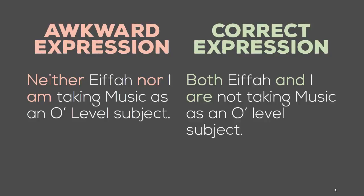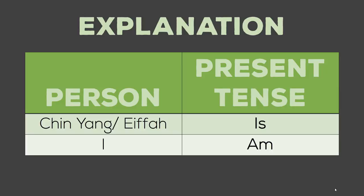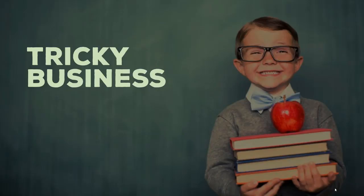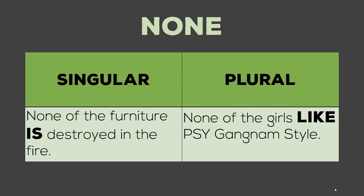In tricky business, we first look at singular and plural with none. None of the furniture is destroyed in the fire — we use is because furniture is singular. None of the girls — girls is plural — so we use the plural verb. It depends on the noun that follows none.